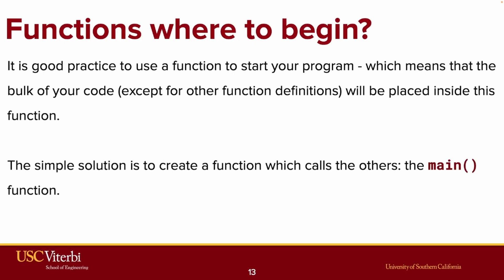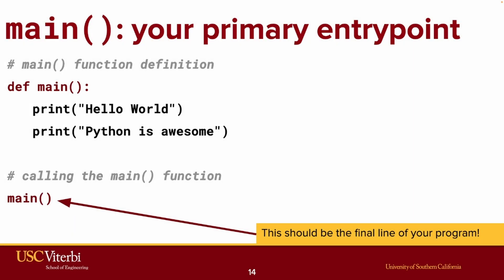Now recognize here, it's actually good practice to use a function to start your program, which means that the bulk of your code, except for other function definitions, will actually be placed inside of this new function that I'm effectively referencing here. And the simple solution is to create a function which calls the others. The main function. Main is your primary entry point. As you can see, the main function definition wraps up all the code that was in the past written outside of the function definition. And in the final line of code, which is the first line that actually gets run, there is a call to this new function called main.